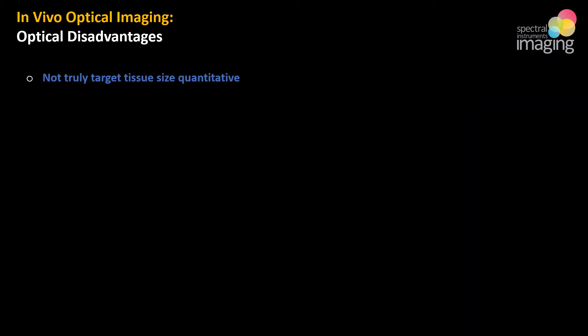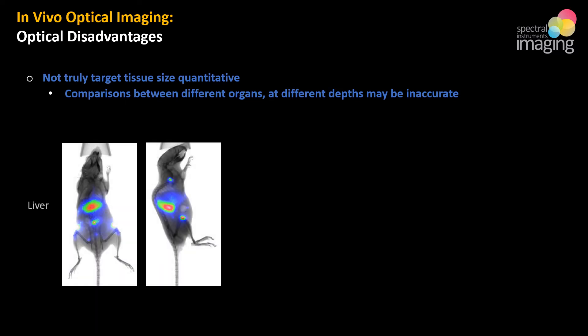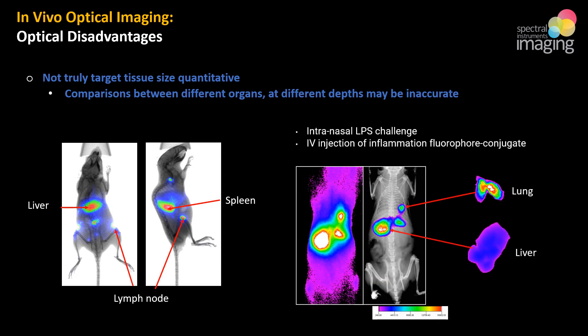Another disadvantage: the overlays shown are not quantitative of organ size as displayed, or between different organs, due to scatter, reflection, and absorption of light as well as the location of the organs. On the left, we can see optical light and a 2D X-ray overlay for liver and spleen, which look quite similar in size based on light expression, even though in a mouse we know these organs are not. In another example with induced lung inflammation and a targeted reporter, in vivo analysis appears to show greater inflammation in the liver, but ex vivo analysis shows the lungs with greater signal. Comparisons of tissues at different depths may not be accurate with optical imaging.